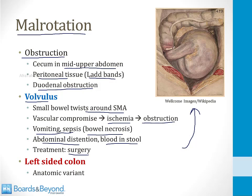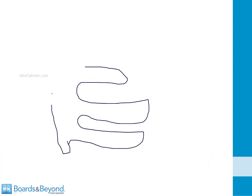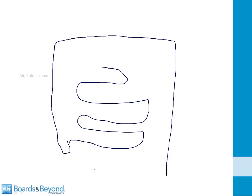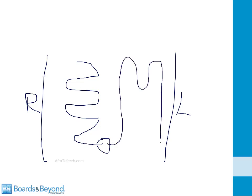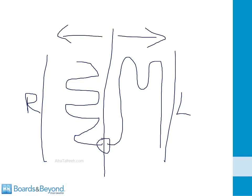Malrotation can also lead to a left-sided colon, an anatomic variant where the small intestine snakes along the right side of the abdomen and plugs into the large intestine, which then loops around the left side. Thus, the small intestine is on the right and the large intestine is on the left — hence left-sided colon. This is sometimes picked up incidentally on abdominal imaging.